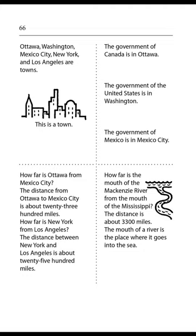Page 66. Ottawa, Washington, Mexico City, New York, and Los Angeles are towns. The government of Canada is in Ottawa. The government of the United States is in Washington. The government of Mexico is in Mexico City. How far is Ottawa from Mexico City? The distance from Ottawa to Mexico City is about 2,300 miles. How far is New York from Los Angeles? The distance between New York and Los Angeles is about 2,500 miles. How far is the mouth of the McKenzie River from the mouth of the Mississippi? The distance is about 3,300 miles. The mouth of a river is the place where it goes into the sea.